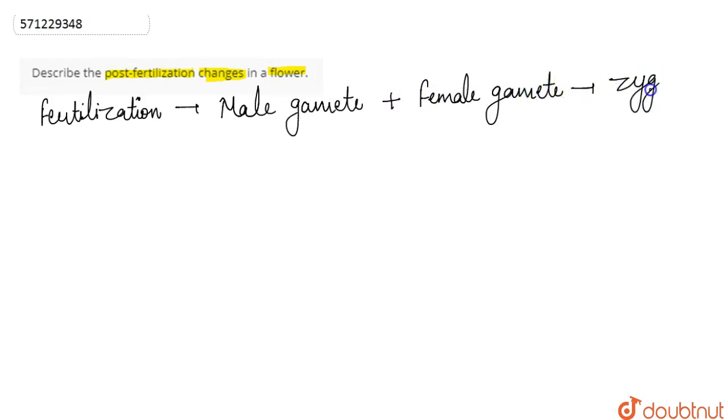So if we first talk about fertilization in our flower, fertilization is basically a process in which the male gamete and female gamete fuse to form a diploid zygote. They fuse to form a zygote which is diploid in nature.